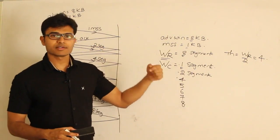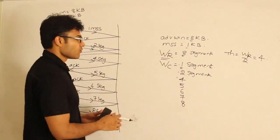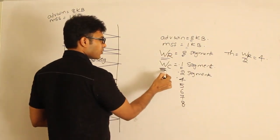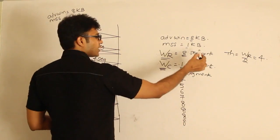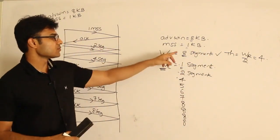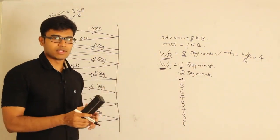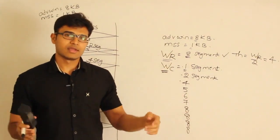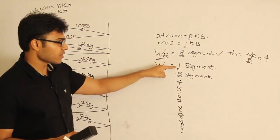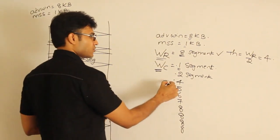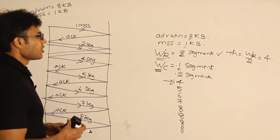Even if the network permits sending more than 8 segments at one time, you are not supposed to, because the receiver can only handle 8. Once the congestion window reaches the maximum receiver capacity, it stays there. When we say receiver capacity is 8 segments, it doesn't mean it wants to receive only 8 total — it means in one go, you can send a maximum of 8 segments. Even if you have 1000 packets, you send a maximum of 8 at a time. Start with 1, grow to the threshold, then grow linearly to the maximum.